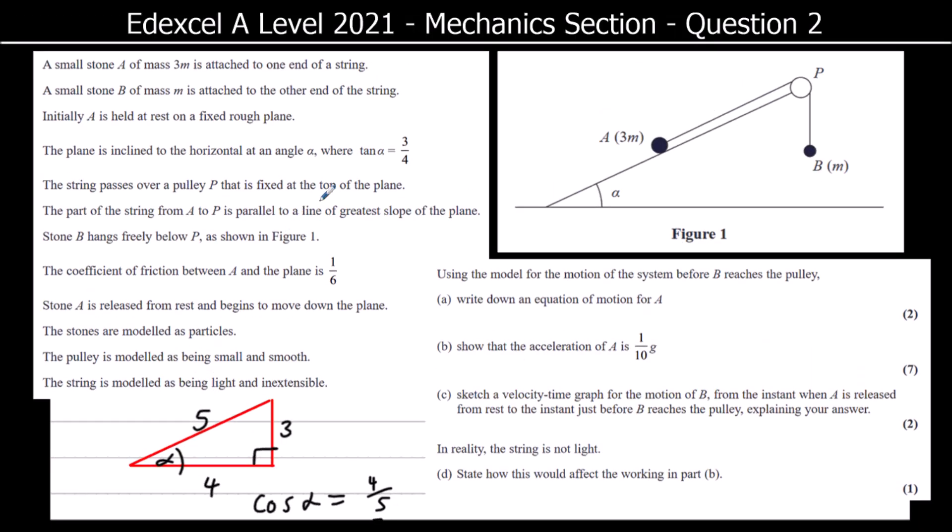A string passes over the pulley P fixed at the top of the plane. The part of the string from A to P is parallel to the line of greatest slope. Stone B hangs freely. The coefficient of friction is 1 sixth. Stone A is released from rest and begins to move down the plane. The stone is modelled as particles, the pulley is modelled as smooth and small, and the string is modelled as light and inextensible.